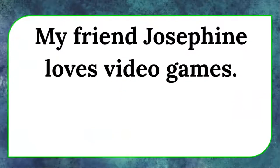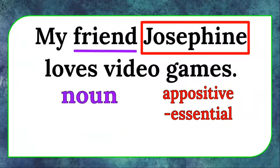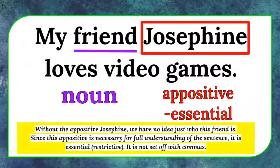My friend Josephine loves video games. The appositive is "Josephine." It is essential. It refers to the noun "friend." Without the appositive Josephine, we have no idea just who this friend is. Since this appositive is necessary for full understanding of the sentence, it is essential or restrictive. It is not set off with commas.